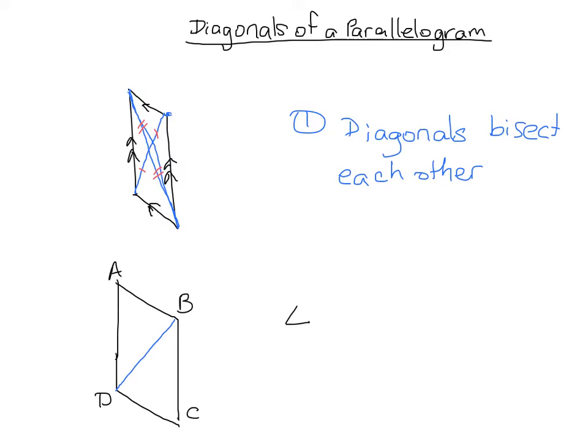Then triangle ABD is going to be congruent, the same angles and the same size, to triangle BDC. And that's a given for every diagonal of every parallelogram.